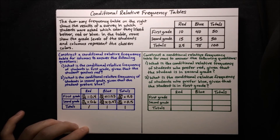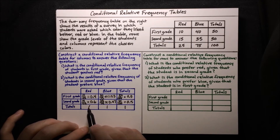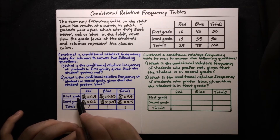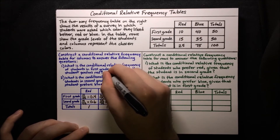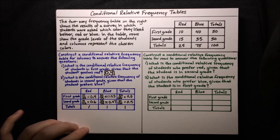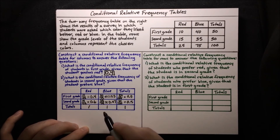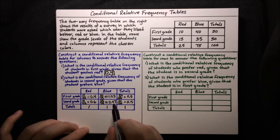Now we can answer the questions. First, what is the conditional relative frequency of students in first grade, given that a student prefers red? Since we're given the student prefers red, we look in the red column, and ask what portion of those students are in first grade. Looking at the first grade row, we see that's 0.4. For the second question — the conditional relative frequency of students in second grade given that the student prefers blue — we look at the second grade row in the blue column, and the answer is 0.47.